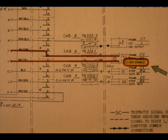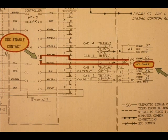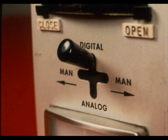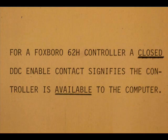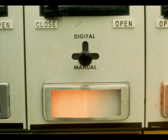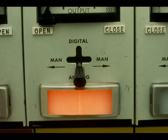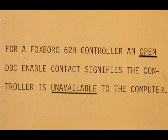The computer receives one more signal from the controller. The signal is called DDC-enable. This signal is produced by a contact closure inside the controller. When the controller selector switch is in digital position, the contact closes. The computer senses the closure and knows the controller is available for direct digital control. If the selector is in manual or analog, the contact is open and the computer knows that it cannot enable direct digital control.